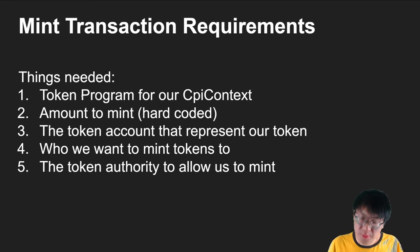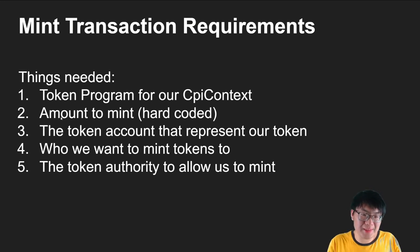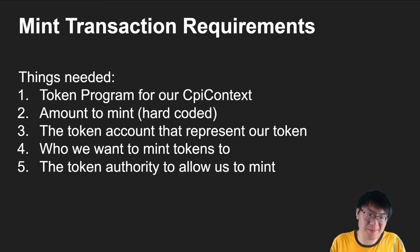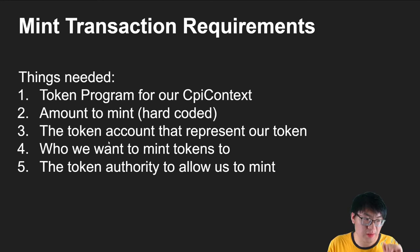Before we start talking about the code, let's talk about what we expect as requirements. There are essentially five things we need. First, the token program — it's just a static thing for our CPI context. Then the four parameters: the amount we're going to mint (I'll just hard-code this), the token account representing the token we want to use to mint, the account we want to mint tokens to, and the authority used to create our token.